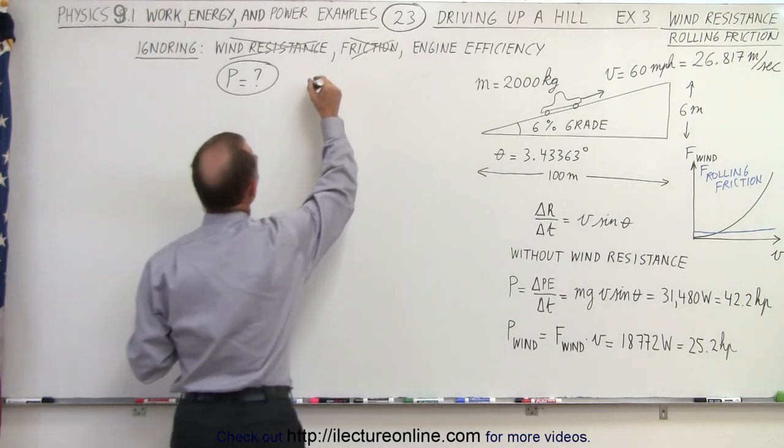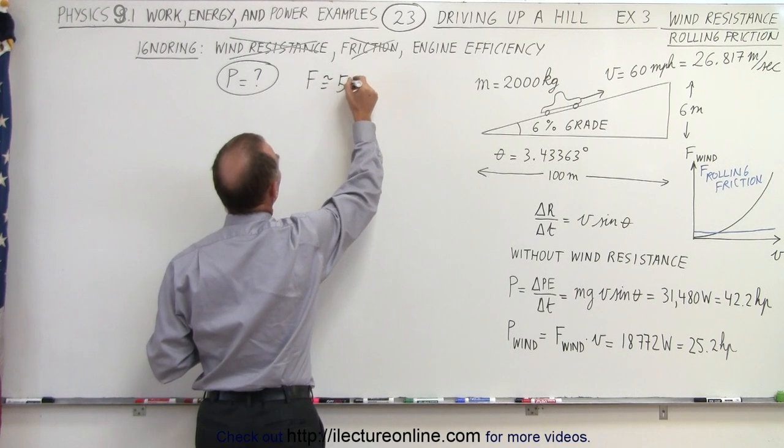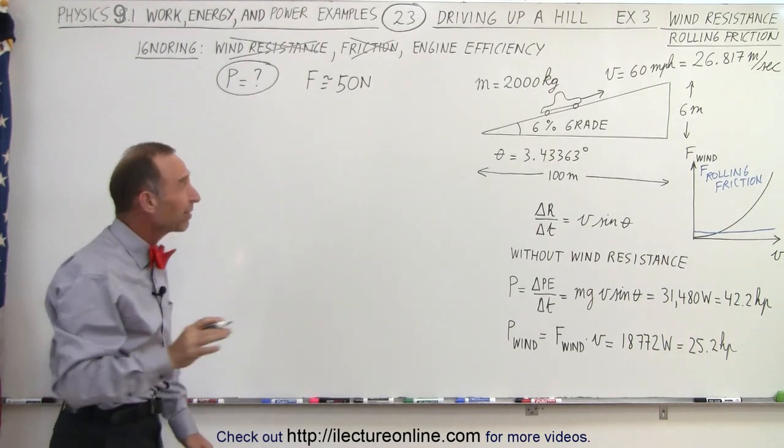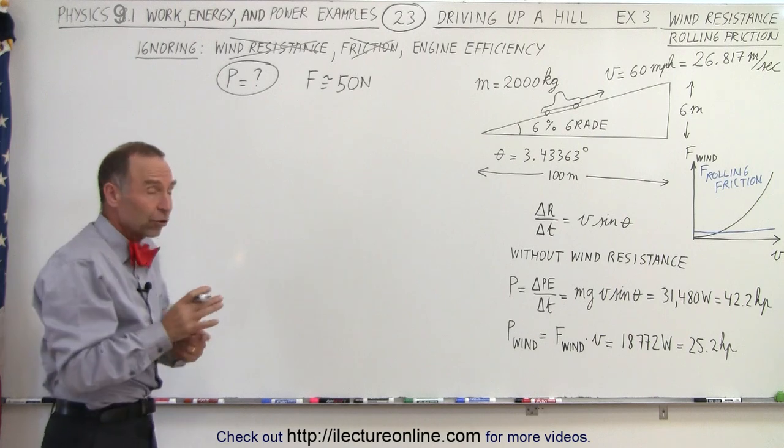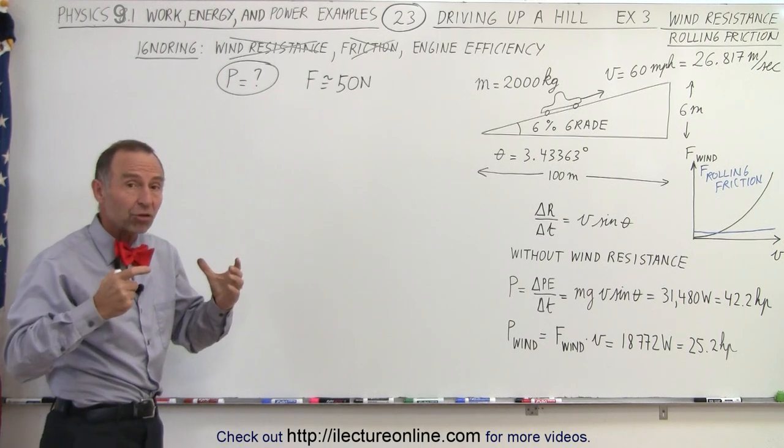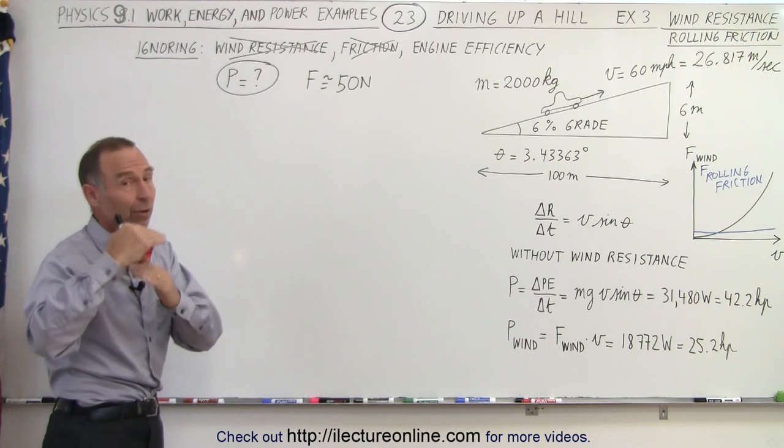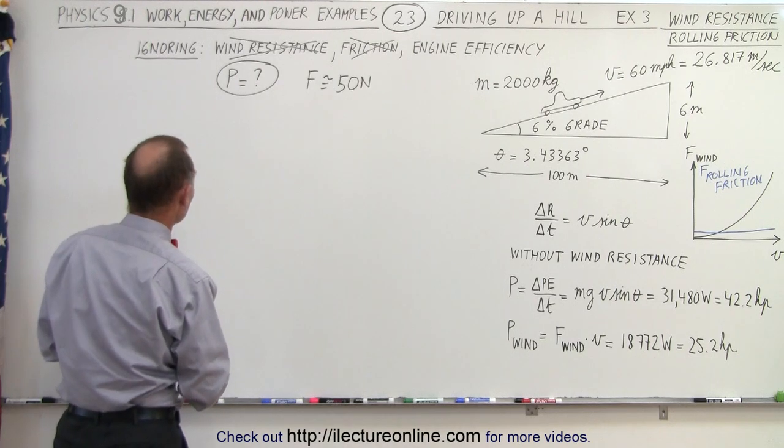The force is about 50 newtons, or about 10 pounds of force that we have to overcome. It also depends on how well your tires are inflated. If you have high-pressure tires, the rolling friction goes way down. If you have under-inflated tires, the rolling friction goes up, and you'll need more power to overcome that additional rolling friction.